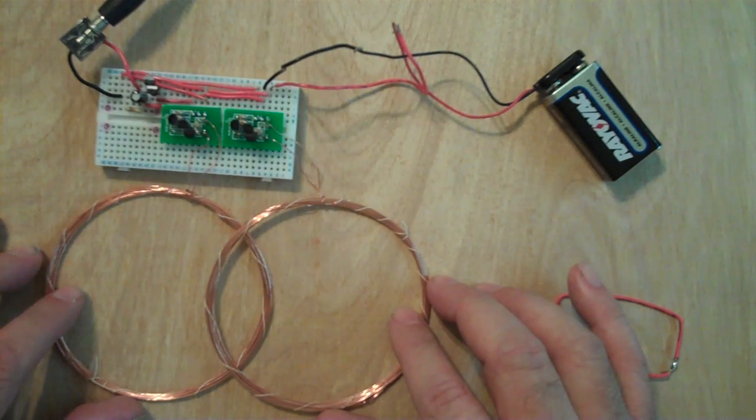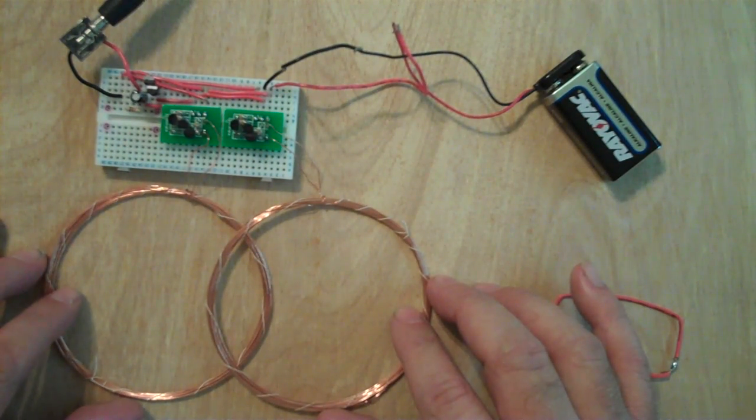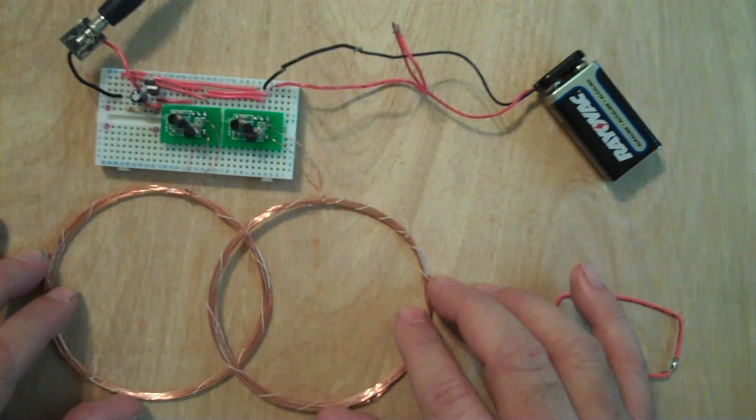The object is to tune it or move the coils so that you're on the outermost place where it starts to oscillate. So in other words, if I move it out, it starts to oscillate.